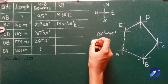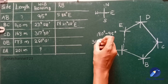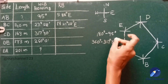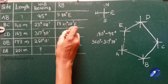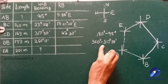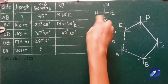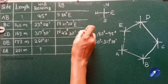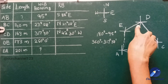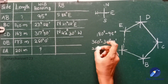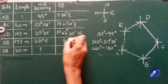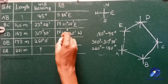Next, 317 degrees 30 minutes comes in the fourth quadrant. We subtract from 360 degrees: 360 minus 317 degrees 30 minutes gives 42 degrees 30 minutes, so it is North 42 degrees 30 minutes West. Next, 260 degrees 0 minutes comes in the third quadrant. We subtract 180 from this to get 80 degrees, so it is South 80 degrees West.